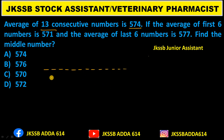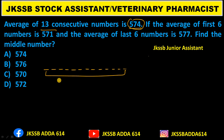I have 13 numbers whose average is 574. To find the sum of all 13 numbers, I use: sum = average × number = 574 × 13. This gives us value V1. This is our first step.